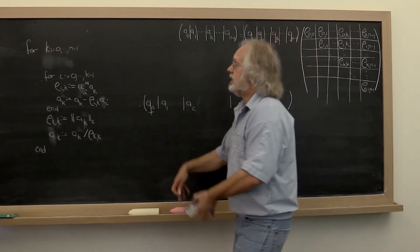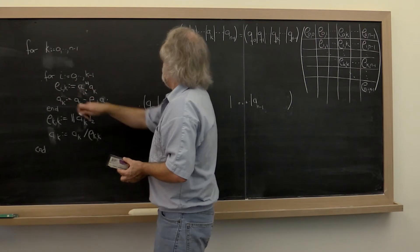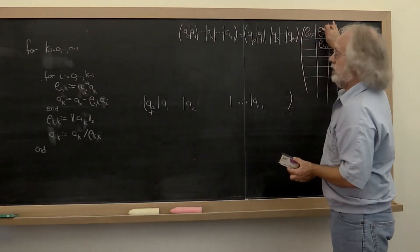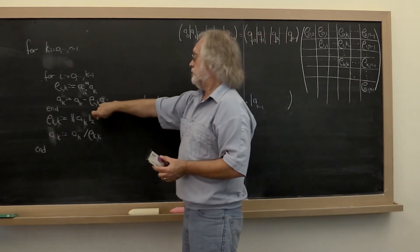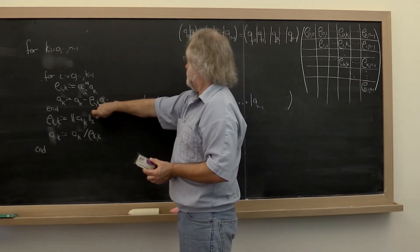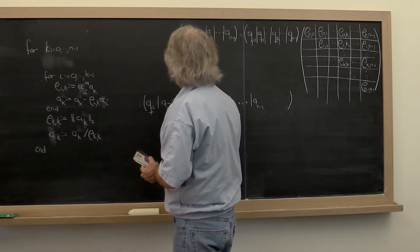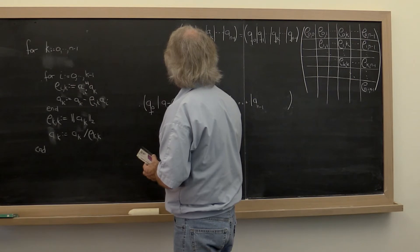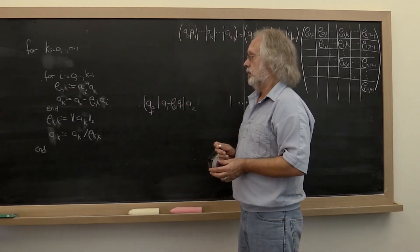Okay, in the next iteration we go through and now we actually do compute this entry of r right here. And then we do subtract off this component right here. So at the end of this loop we have this minus rho_01 times q_0 sitting in the second column of A.